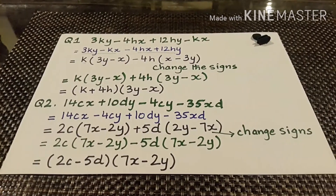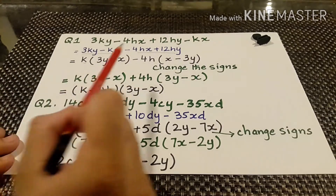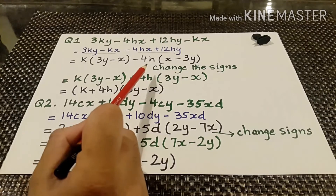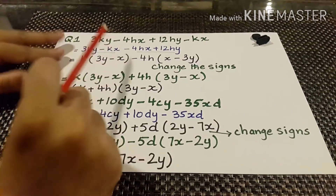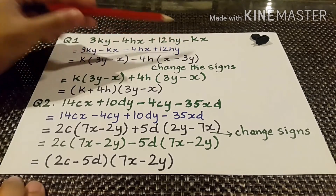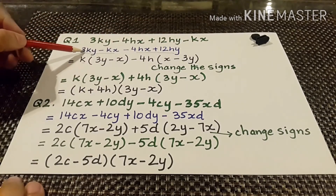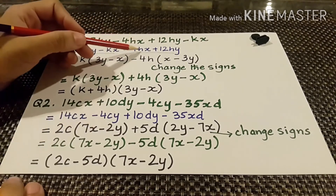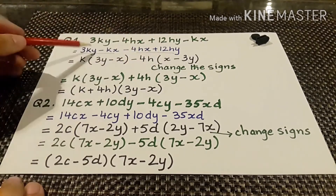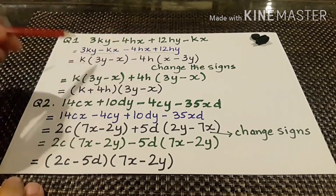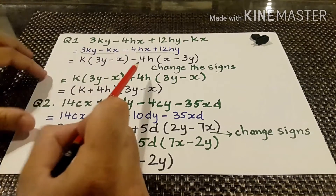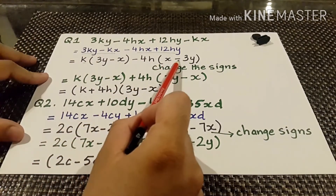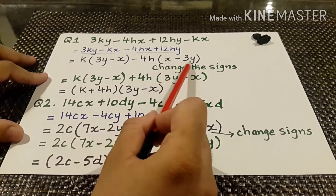Hope you have understood this method also. The third method of doing factorization is that if we get values that are the same but their signs are different, we can solve them by changing the signs. Question number 1 states: 3ky minus 4hx plus 12hy minus kx. We rearrange as 3ky minus kx minus 4hx plus 12hy. From group 1 we take k as common giving 3y minus x inside, and from group 2 we take 4h as common giving x minus 3y. The values are the same but signs are different.